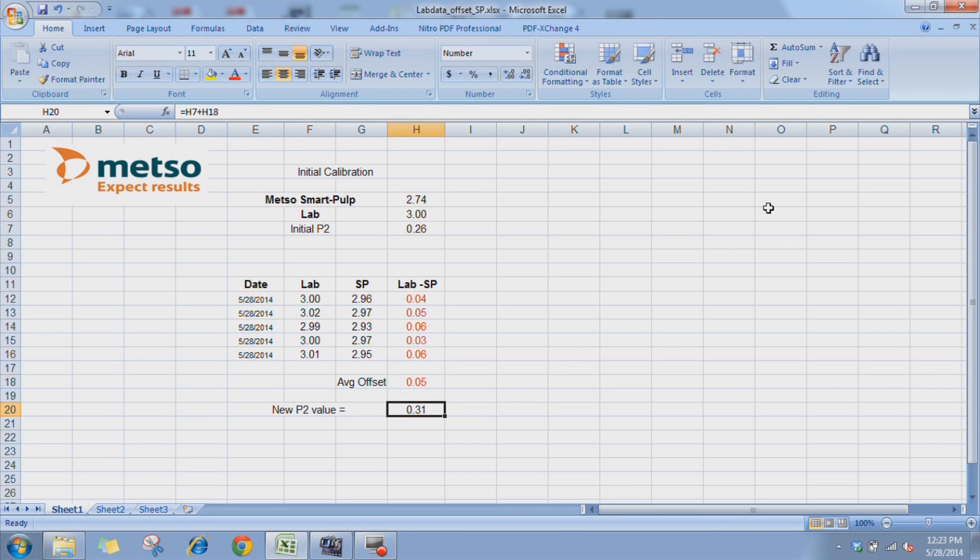We are basically checking our initial calibration and allowing statistics to work for us with the follow-up samples. So here, as we see, the SmartPulp was initially reading 2.74. Our lab came back and said the actual consistency was 3.00. The difference was 0.26. We put that into our offset. It brought the SmartPulp reading up. Now, as we took follow-up samples, we see the average offset of the five follow-up samples was 0.05. So we simply add the 0.05 to our initial P2 value, and the new P2 value would be 0.31. They're basically additive.